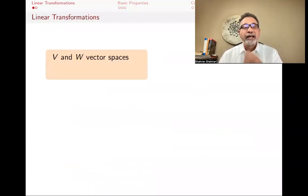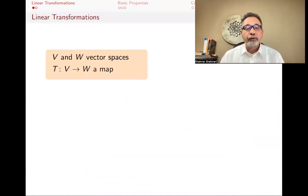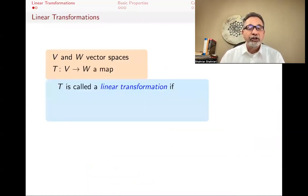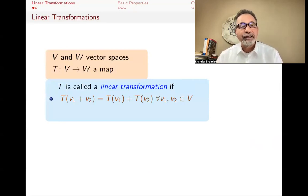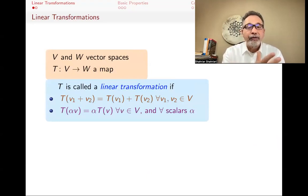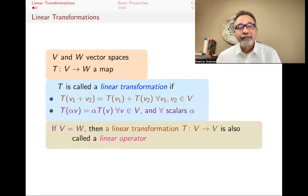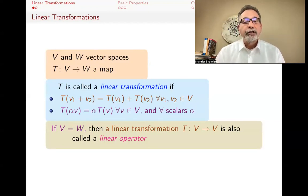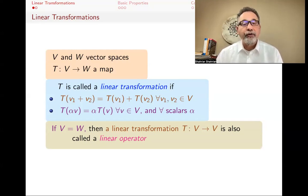Let me remind you what a linear transformation is. V and W are vector spaces. We have a function from one vector space to the other, called a linear transformation, if it respects addition — T(V1 + V2) = T(V1) + T(V2) for all V1, V2 in V — and T(αV) = αT(V) for all V in V and all scalars α. We also sometimes have V and W be the same vector space; in those cases we use the word linear operator, which is just a linear transformation where the domain and codomain are the same.